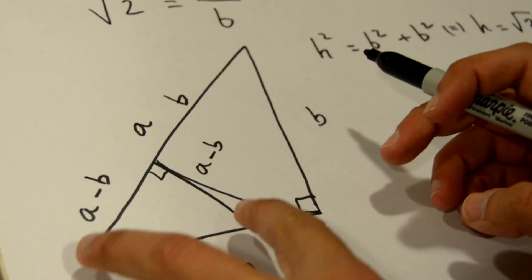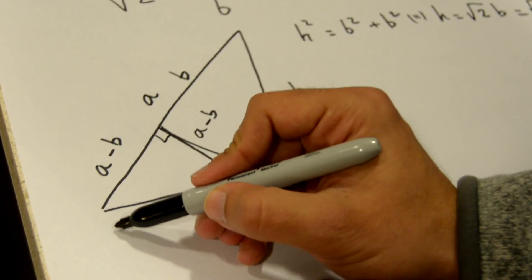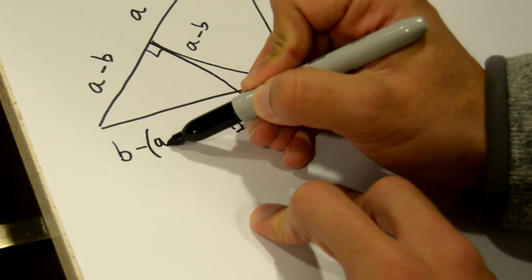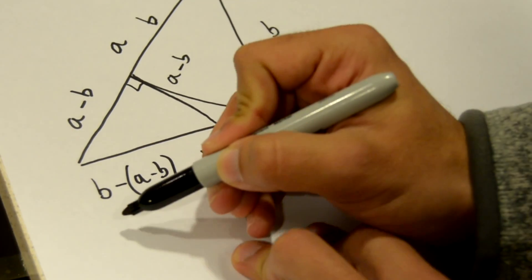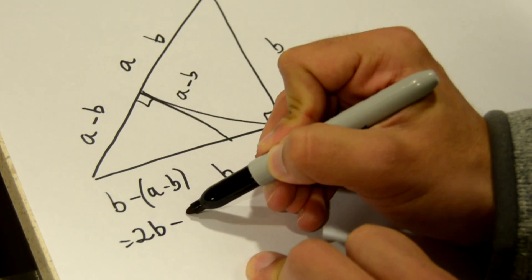we can determine this length here, which is b minus (a minus b), which equals 2b minus a.